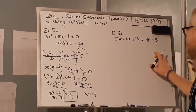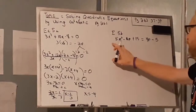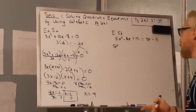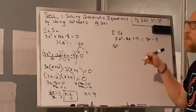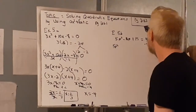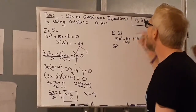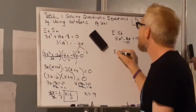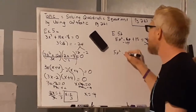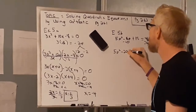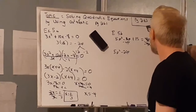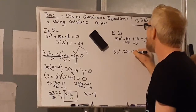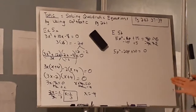So all of this has to equal 0, which means I have to combine like terms. Are there any like terms with 5p²? None, so I leave 5p² alone. Then 16p and 4p have a like term, so I subtract 4p on both sides — that cancels out and -16p - 4p gives me -20p. Then I add 5 on both sides — that cancels out and 15 + 5 = 20, giving me 5p² - 20p + 20 = 0.